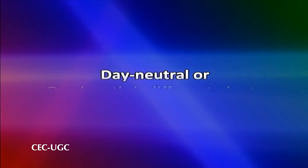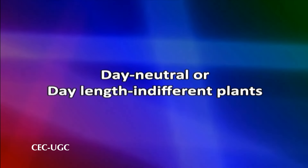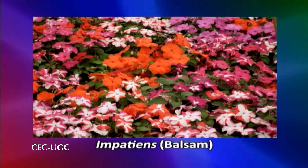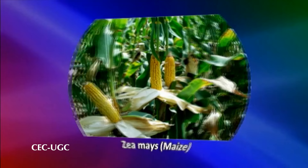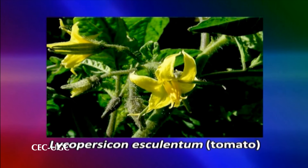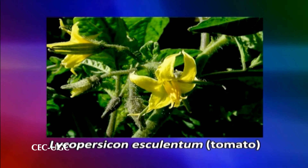Day neutral or day length indifferent plants simply flower after reaching a certain age or size, apparently irrespective of day length. The examples of day neutral plants are Cucumis sativus (cucumber), Impatiens (balsam), Zea mays (maize), and Lycopersicon esculentum (tomato).